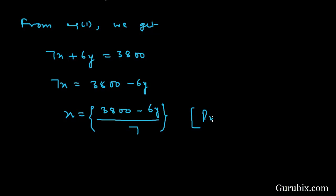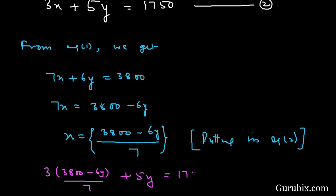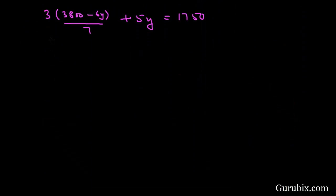Now we shall put this value of X into equation number two. Equation two becomes: three times (3800 minus six Y) over seven, plus five Y, equals 1750. We multiply both sides by seven.